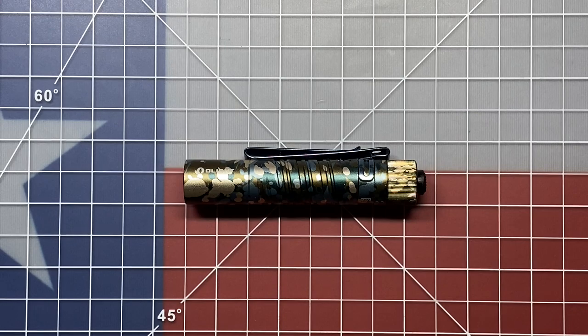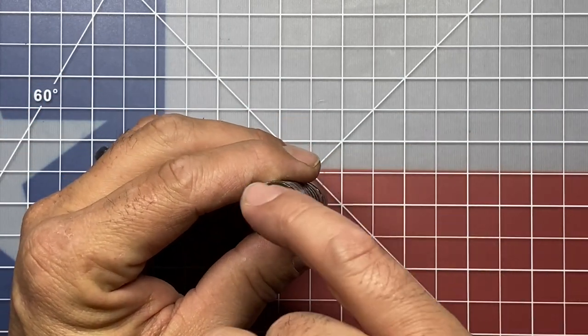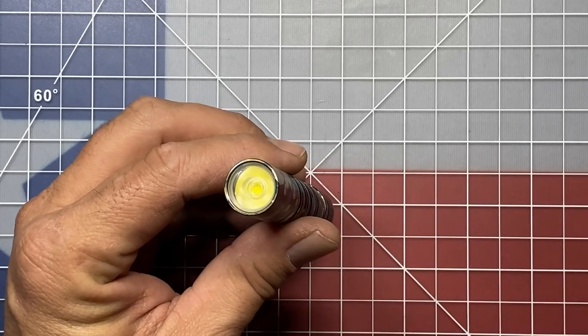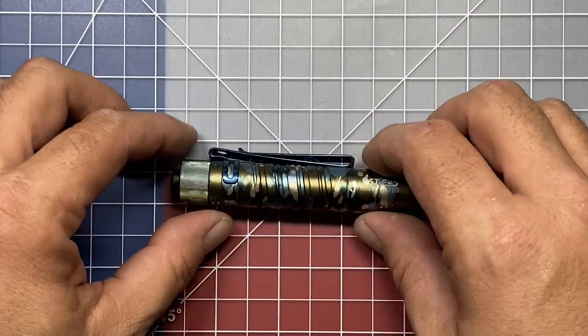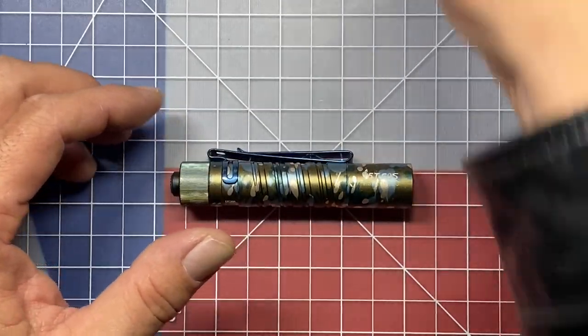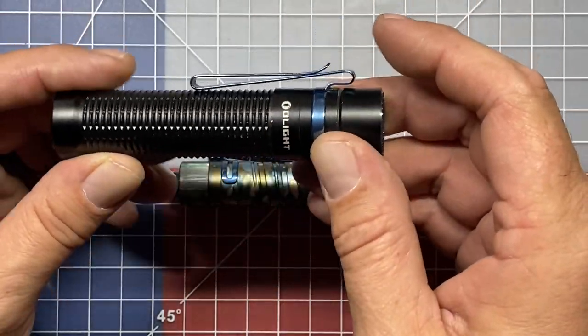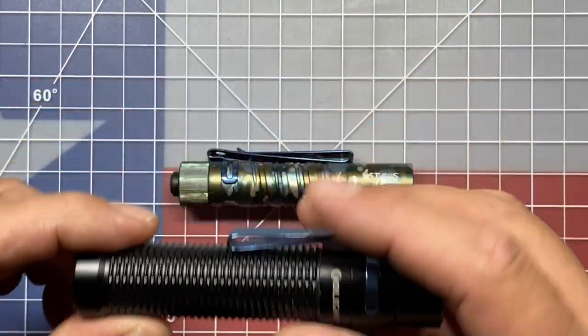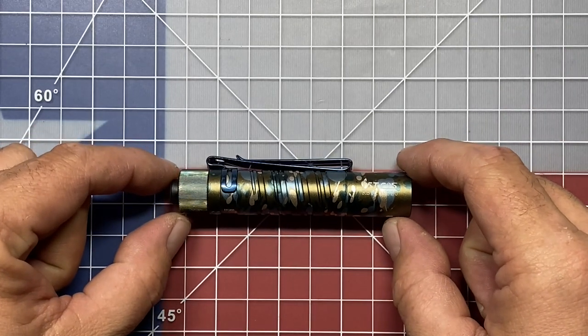So this particular flashlight also incorporates a TIR optic lens, which I got a little fingerprint on mine. I need to clean that off a little bit. So I really like the TIR optic lens. Now the first one that I got the chance to use that with was the Olight Warrior Mini, which is a fantastic flashlight for EDC. But I really like it in this flashlight as well.